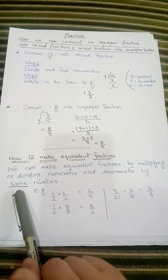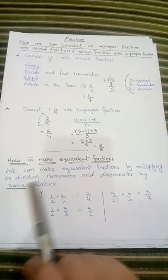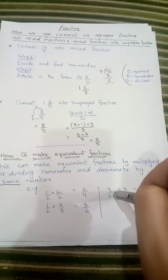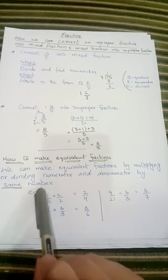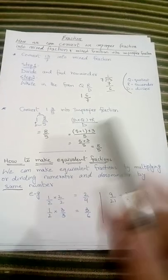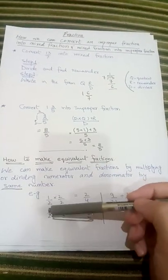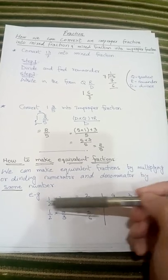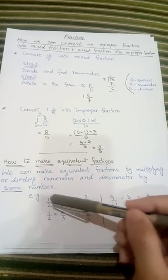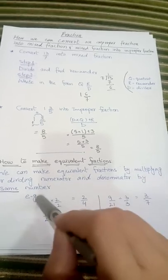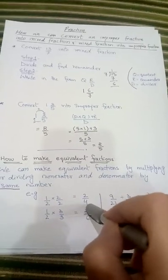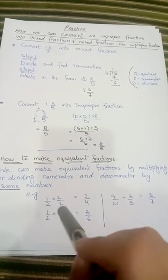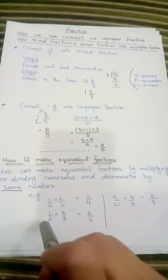You have to focus on the word 'same' — we must multiply or divide the numerator and denominator by the same number. For example, for the fraction 1 upon 2: multiply numerator and denominator by 2 to get 2 upon 4. Then multiply numerator and denominator by 3 to get 3 upon 6. So 1/2, 2/4, and 3/6 are equivalent fractions.